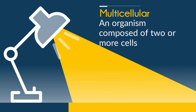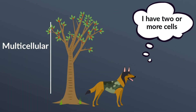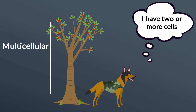A multicellular organism is an organism composed of two or more cells. In this next picture, the tree and the dog are multicellular because they are made up of many, many cells.